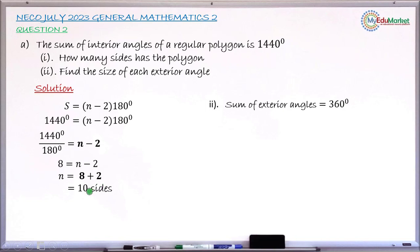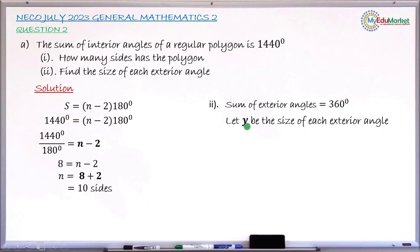This polygon has 10 sides, so the sum of its exterior angles is also 360 degrees. Let y be the size of one exterior angle, which equals the size of all other exterior angles since the polygon is regular. Since there are 10 sides, there are 10 exterior angles, so multiplying y by 10 gives 360 degrees.